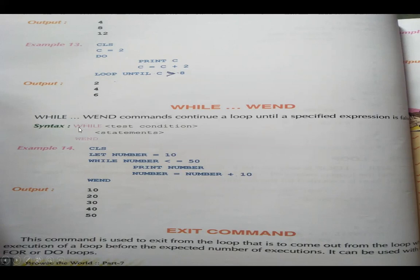While/Wend command works similarly to do until loop but without 'do'. Syntax: while test condition, statement, wend. Here n starts at 10; while n less than 50: print 10, then 10 plus 10 is 20, 20 less than 50 — print 20; then 30, print 30; then 40, print 40; then 50, 50 equals 50 — condition fails, loop stops. Last value printed is 50.